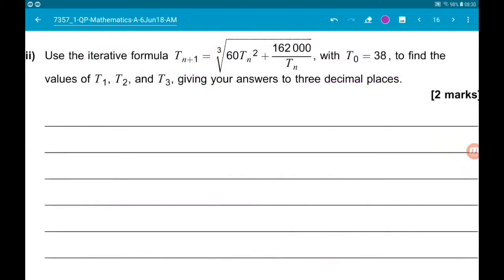In part 2, it says use the iterative formula t(n+1) equals the cube root of 60t(n) squared plus 162,000 over t(n), with t0 equals 38, to find the values of t1, t2, and t3 to 3 decimal places. So this is just use of calculator, it's iteration.